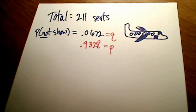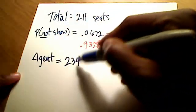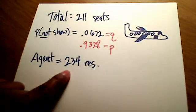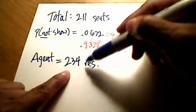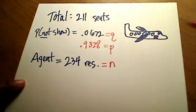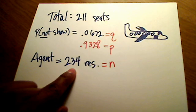The other thing they told us was that a booking agent actually overbooked this flight by taking 234 reservations. That's quite a bit more than 211 seats — they really overbooked this flight. Those 234 reservations is my n, my sample size. So I've got an n of 234.